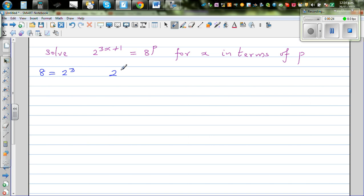So this equation changes to 2 to the power of 3x plus 1 is equal to 2 to the power of 3 raised to p. Using the power rules, this is 2 to the power of 3p.